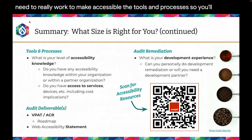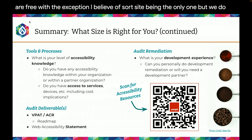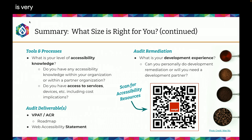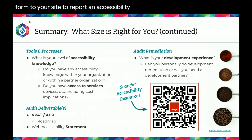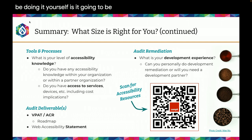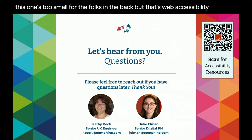The tools and processes: revisit the grid for the skill sets needed, consider price points — some tools are free, like most of what Kathy demoed, with SortSite being the paid exception. Screen readers like JAWS are also paid. The audit deliverables: the VPAT, the ACR, your roadmap for implementing and revisiting work, the web accessibility statement, and adding a form to report an accessibility issue. For audit remediation: what's your development experience — are you doing it yourself or working with a partner? Make sure to snap that QR code for the resources guide, or catch it on the last slide.